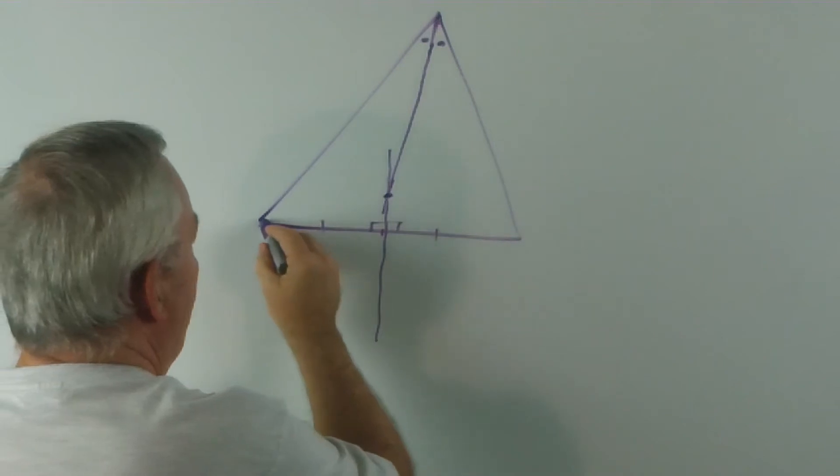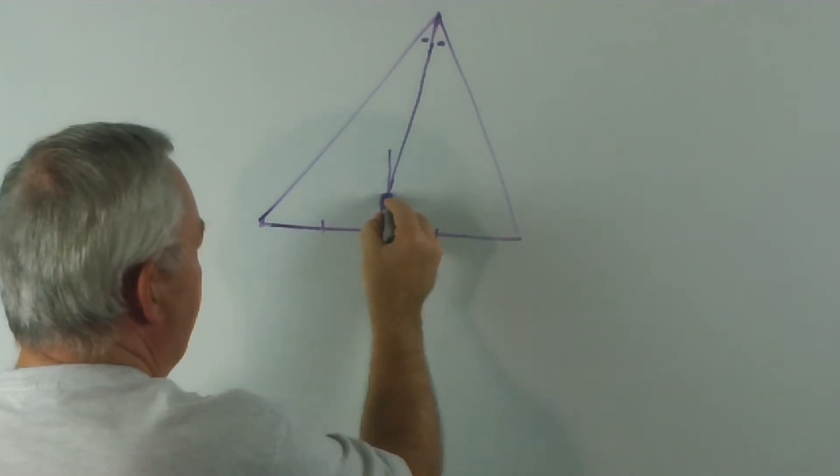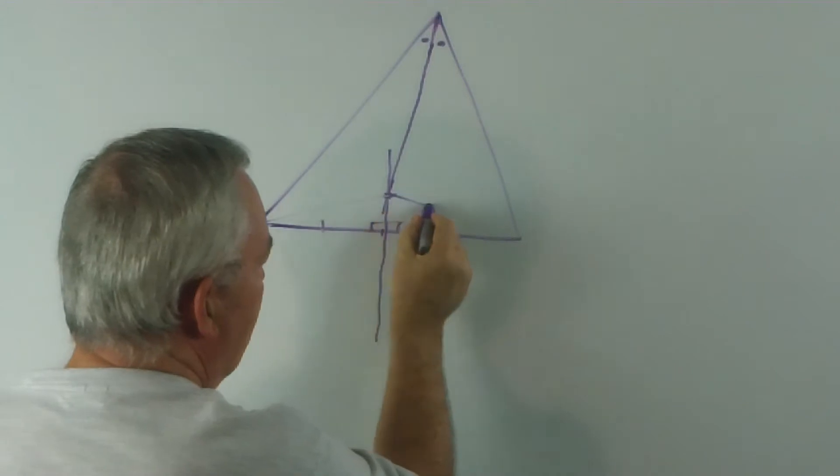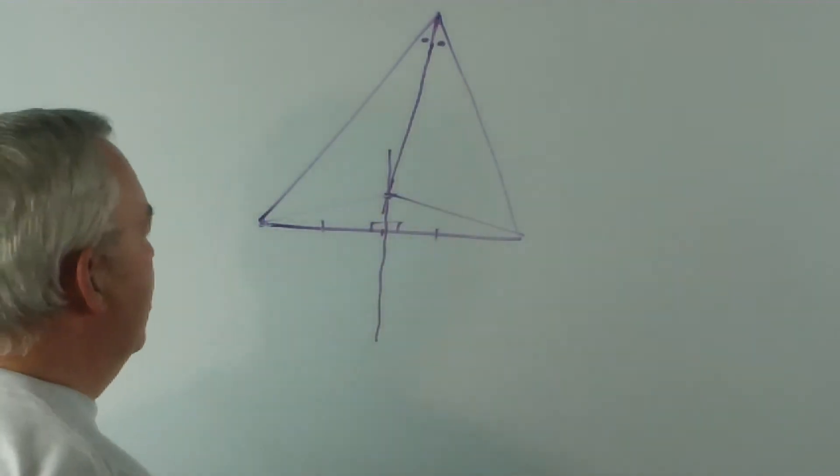Now, we draw, from this point, a line to each of the bottom corners, the bottom vertices.